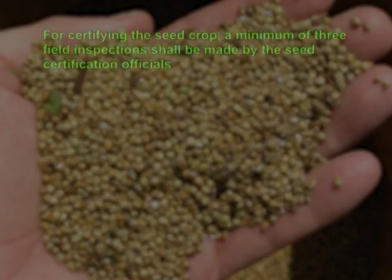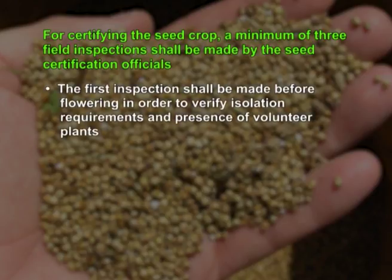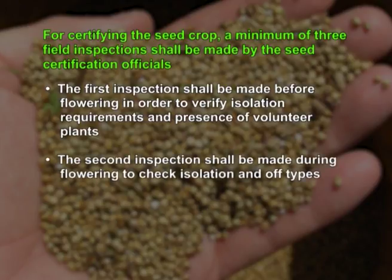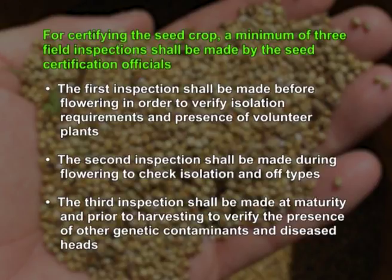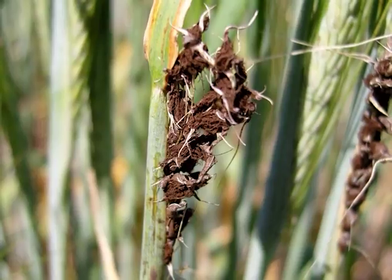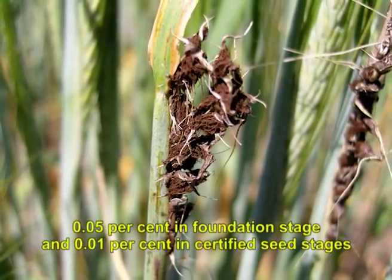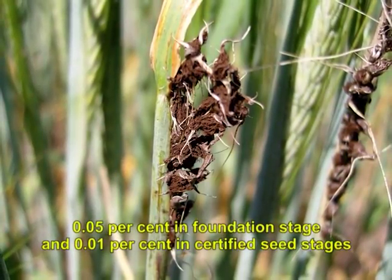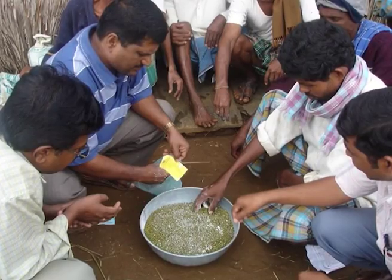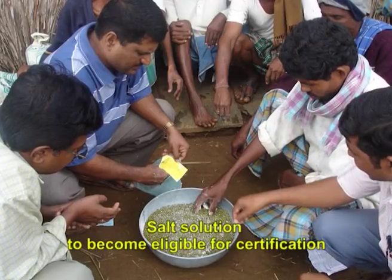The most important stages for roguing are maximum tillering, flowering, and before harvesting. For certifying the seed crop, a minimum of three field inspections shall be made by seed certification officials. The first inspection is made before flowering to verify isolation requirements and presence of volunteer plants. The second inspection is during flowering to check isolation and off-types. The third inspection is at maturity and prior to harvesting to verify presence of other genetic contaminants and diseased heads. Off-types and ear heads infected with green smut at final inspection should not exceed 0.05% in foundation stage and 0.01% in certified seed stage. Even if green smut infection is within the limit, seeds are graded with salt solution to become eligible for certification.